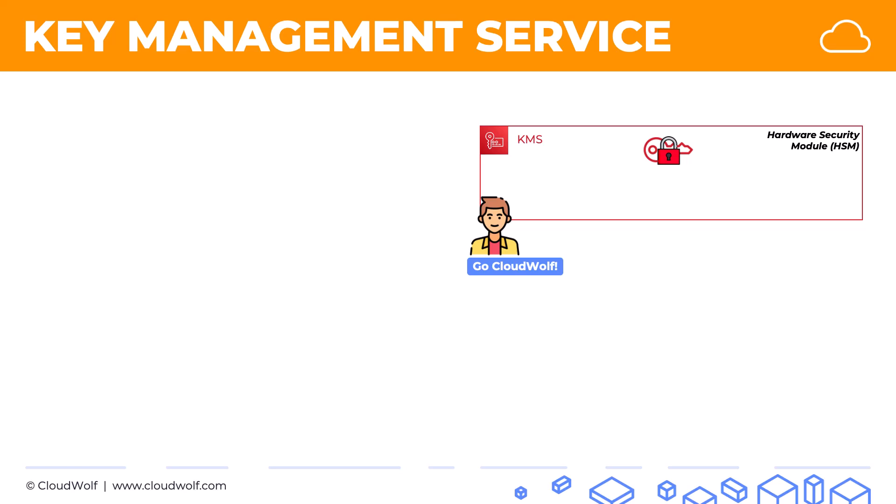Not only is the key not stored in plain text form, but even if somebody goes into the AWS facility and tries to tamper with the hardware, it is designed to fail on purpose, so nobody can access your keys. Jack will need encrypt permissions — we assume he has them — in order to use this key to encrypt his password or sensitive data.